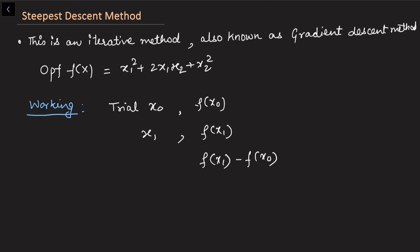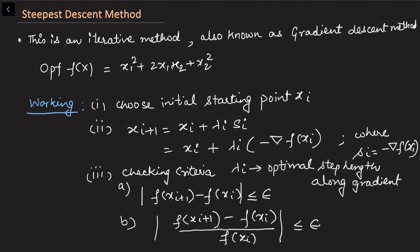For the steepest descent method, the working is: choose initial starting point xi, then calculate xi+1 along the gradient direction. The formula is xi+1 = xi + λi * Si, where Si is the negative of the gradient — the partial derivatives of the function with respect to each variable — and λi is the optimal step length to find the next point.